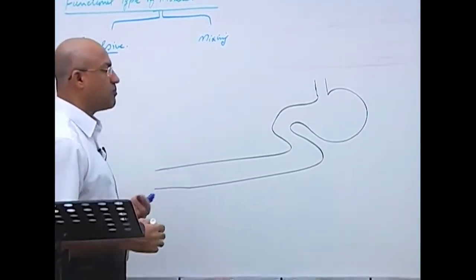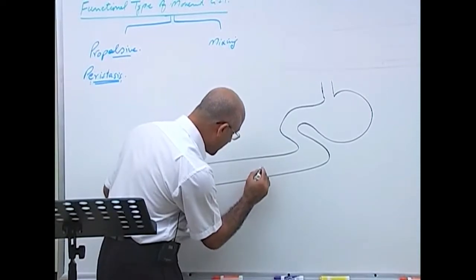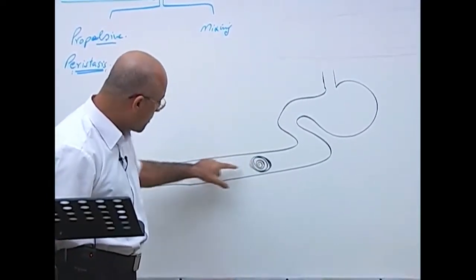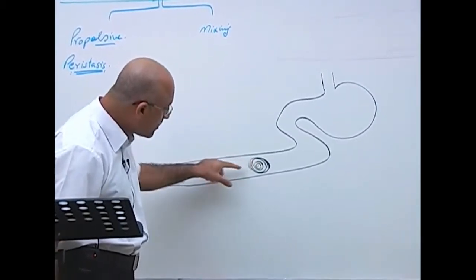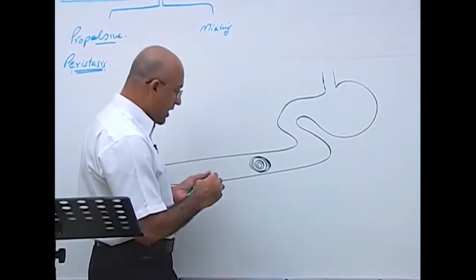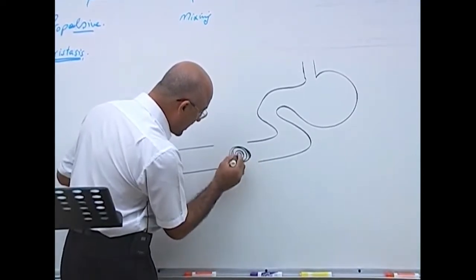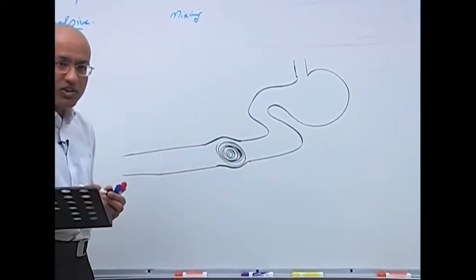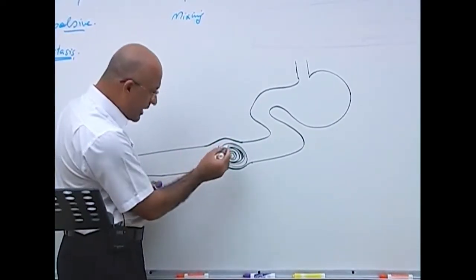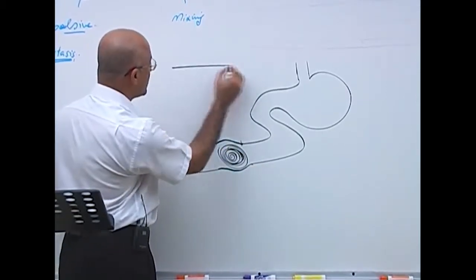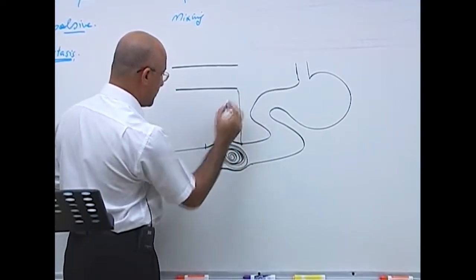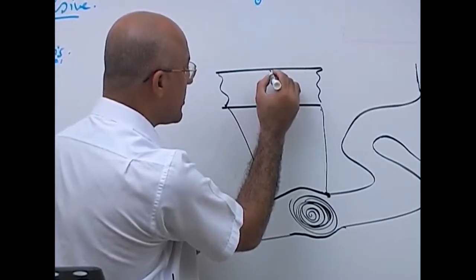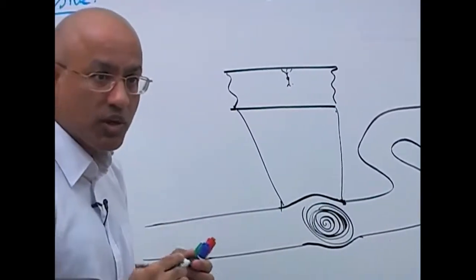The basic concept of peristalsis: let's suppose there is a bolus or accumulation of chyme that needs to be propelled toward the anal side. This bolus will distend the wall of the gastrointestinal system, activating stretch receptors. There are stretch receptors in this area, and when they are stretched, they stimulate the myenteric plexus.